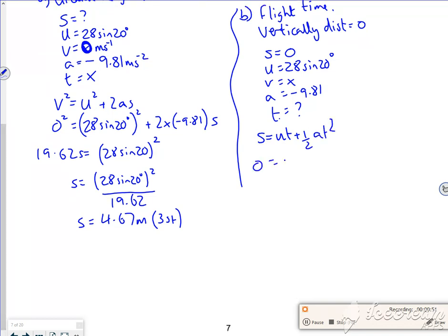So zero is 28 sine 20 times by T minus 9.8 T squared. So I've actually got... oh no, it's a half AT isn't it? A half times by 9.8. So I've actually got a quadratic there.